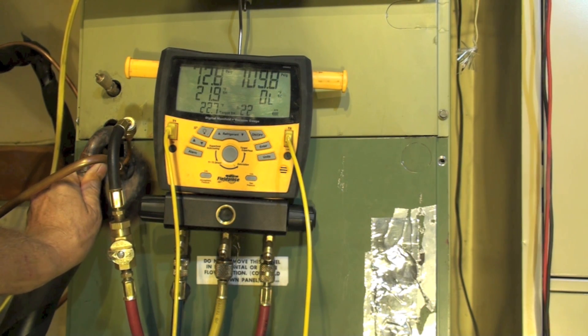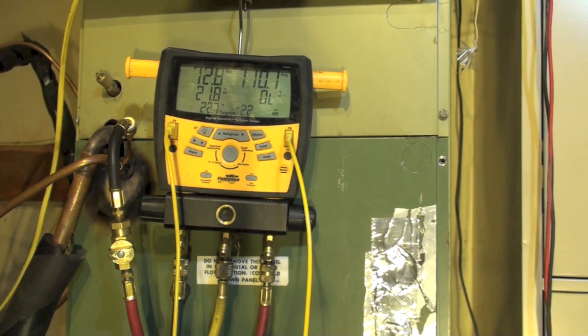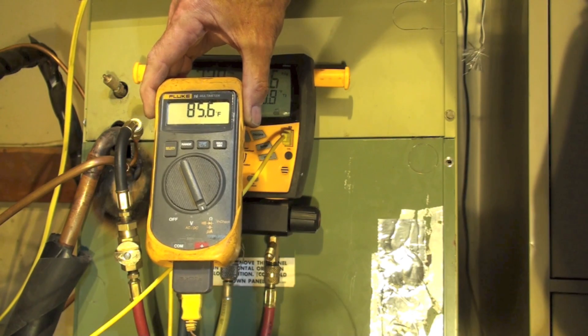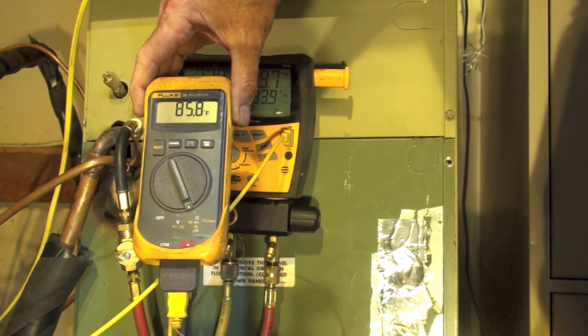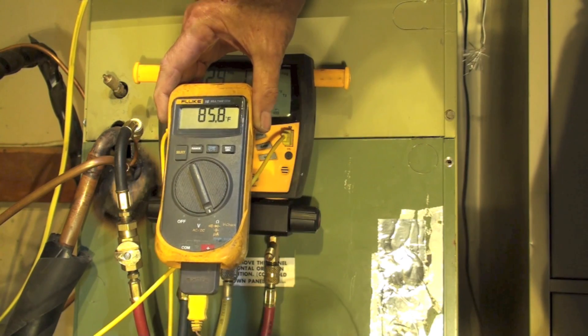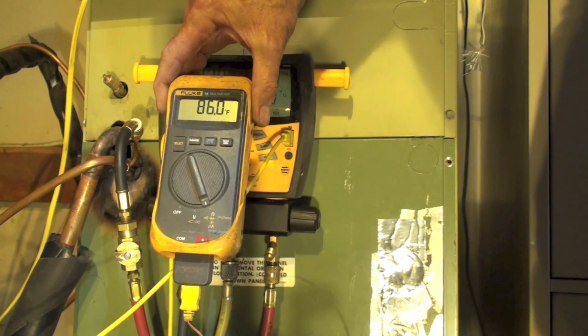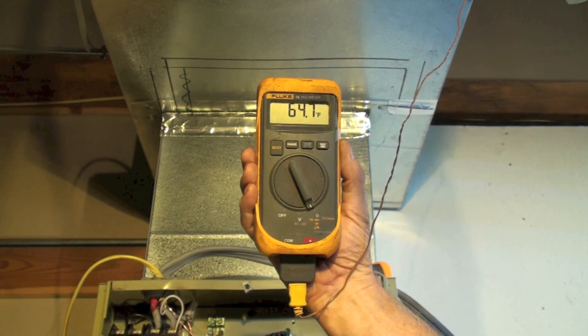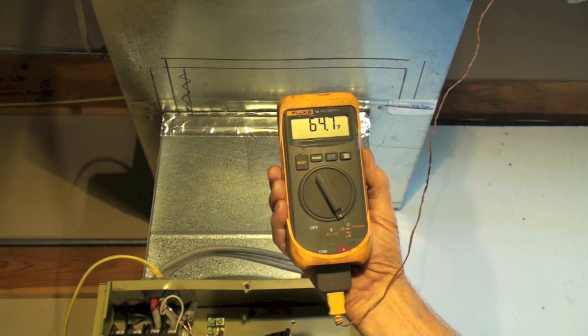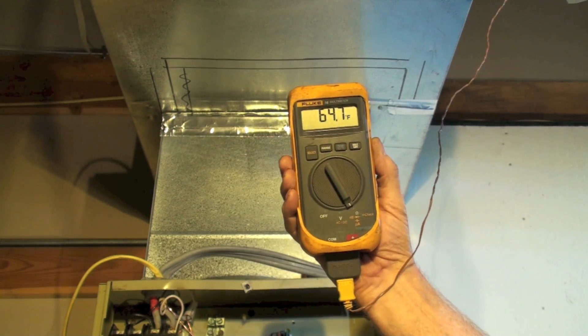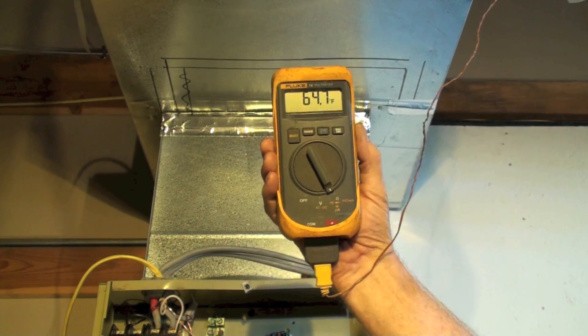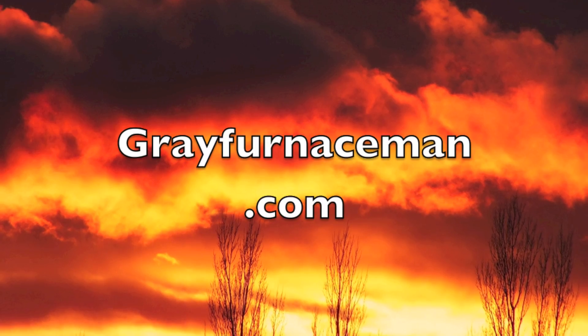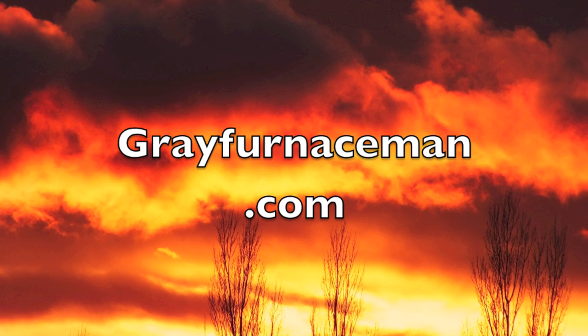As a last test, we've got a pretty high ambient here at the indoor unit, 85.8, and we're going to check the supply temperature. We have 64.7. We'll call that 65. So it was 65 to 85 and a half. So we'll call it 21 degrees split across the coil. That's about right.